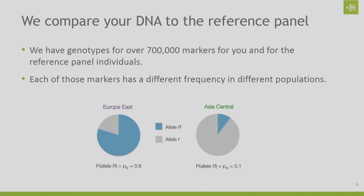In this example I'm showing, there's an allele R. You can see that in Europe East, that allele R is very common. But in Asia Central, it's actually not very common. That doesn't mean that allele R tells us automatically that you're from Europe East, because some people in other parts of the world still have that allele. But it's this frequency — how common that DNA is — that's important.